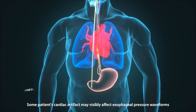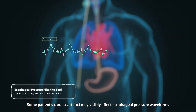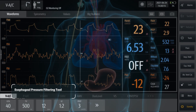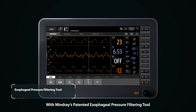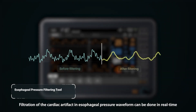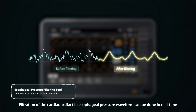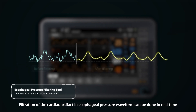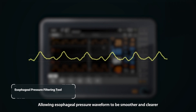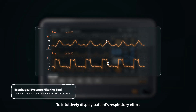Some patients' cardiac artifact may visibly affect esophageal pressure waveforms, making waveform analysis difficult. With MindRace's patented esophageal pressure filtering tool, filtration of the cardiac artifact in esophageal pressure waveforms can be done in real time, allowing esophageal pressure waveforms to be smoother and clearer to intuitively display patients' respiratory effort.